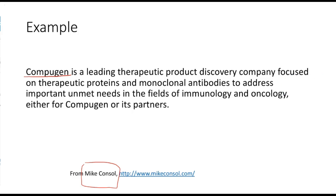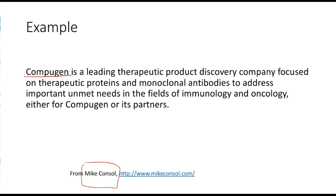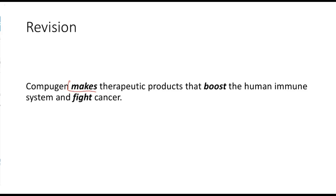That is a mouthful — it was even tough for me to read without taking a breath. His revision focused on using active verbs and describing what Compugen actually does rather than what it is. And here's what he came up with, which is shorter and much more to the point: 'Compugen makes therapeutic products that boost the human immune system and fight cancer.' All that language about immunology, oncology, therapeutic proteins, and monoclonal antibodies — a public reader doesn't understand it. His version focuses on what it makes and what it does: boost and fight. Beautifully done.